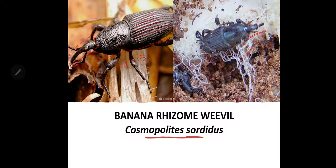The grub is dwarf, stumpy and apodous — legless — and creamy white in color, having a red-colored head and a wrinkled body. Most apodous larvae have a wrinkled body; the wrinkles of the segments are fused with each other and they use those wrinkles to move forward or backward. The grub tunnels into the rhizome in roughly circular tunnels that increase in size with the growth of the grub.